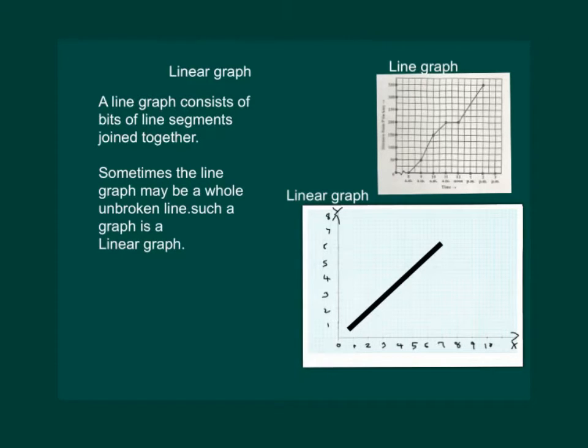Now if we have such points such that if we join them we get an unbroken line something like this, then we will call it as a linear graph. Sometimes the line graph may be a whole unbroken line. Such a graph is called a linear graph.